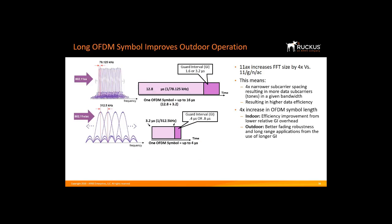In the time domain, this translates to a four times longer OFDM symbol. The data portion has been extended four-fold, from 3.2 microseconds to 12.8 microseconds, and the guard interval can be extended from 0.4 or 0.8 microseconds up to 3.2 microseconds. This allows us to cover both indoor and outdoor operation. For indoor operation, the OFDM symbol can still use a 0.4 or 0.8 microsecond guard interval, which gives us time domain efficiency due to the reduced guard interval overhead.